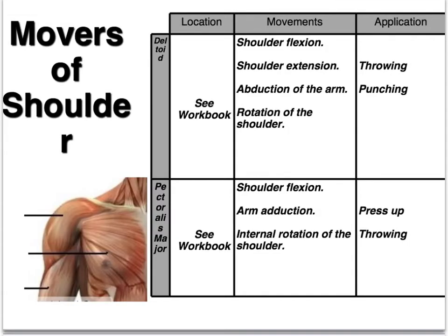Here we have an anterior view of the human body. First we're looking at the deltoid, which is the muscle up here, and the pectoralis major. The deltoid is a very large muscle and is responsible for shoulder flexion and extension — we'll be teaching you the anterior deltoid and posterior deltoid. It's also responsible for abduction of the arm, that is taking the arm away from the body, and rotation of the shoulder.